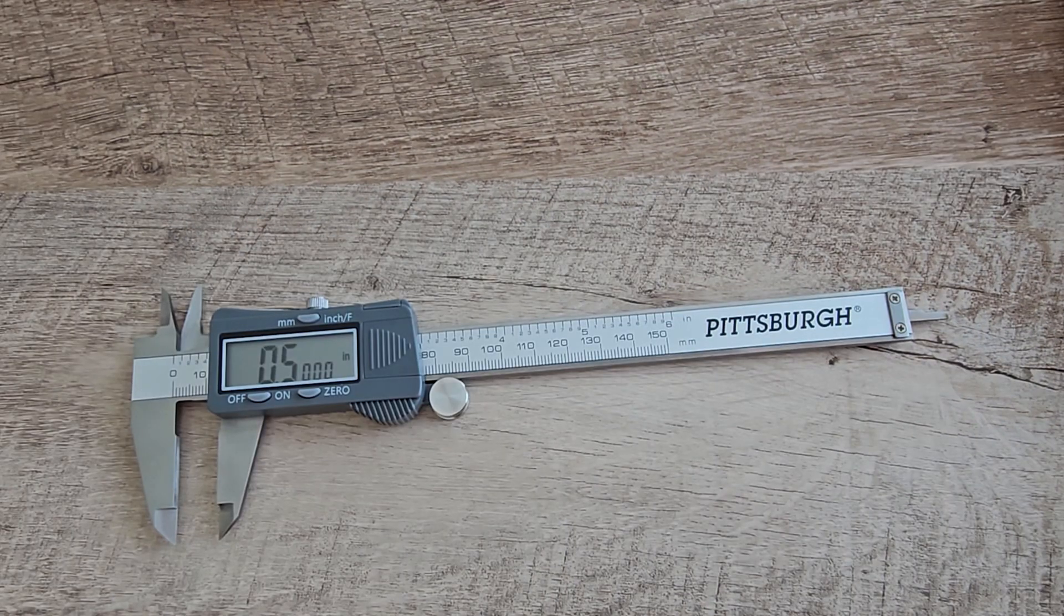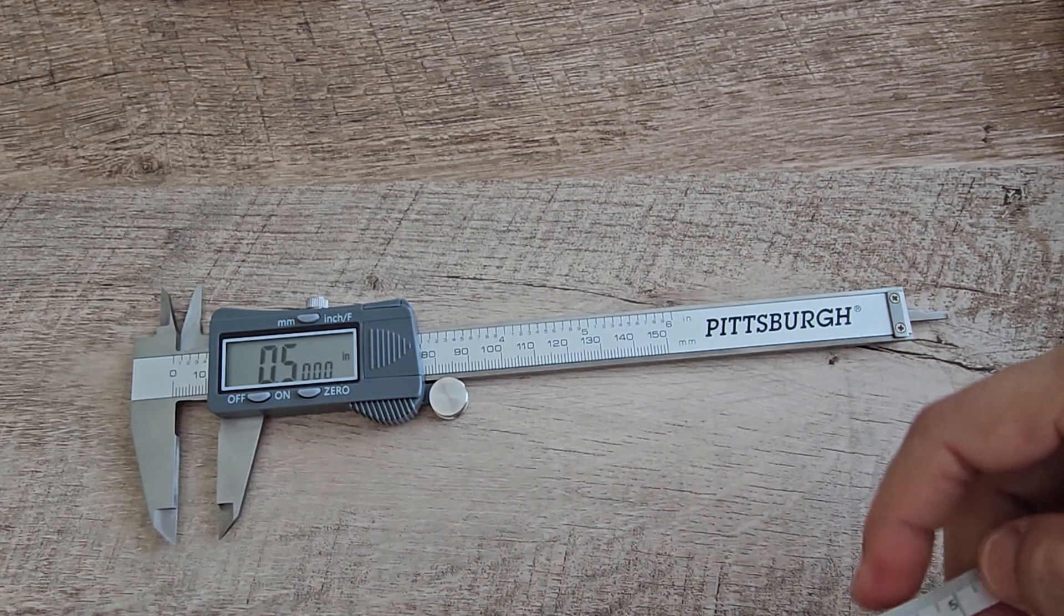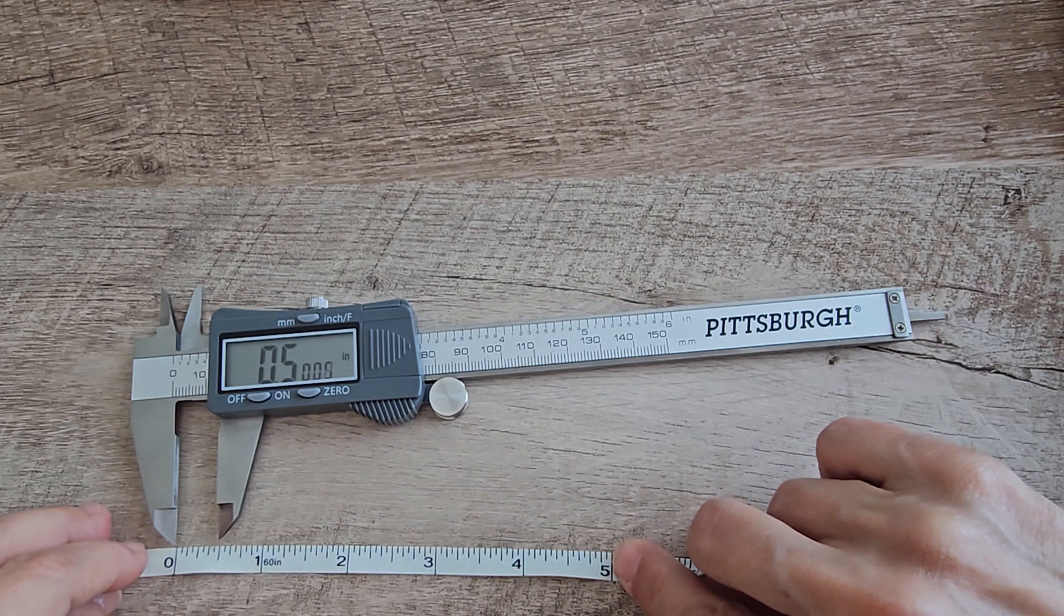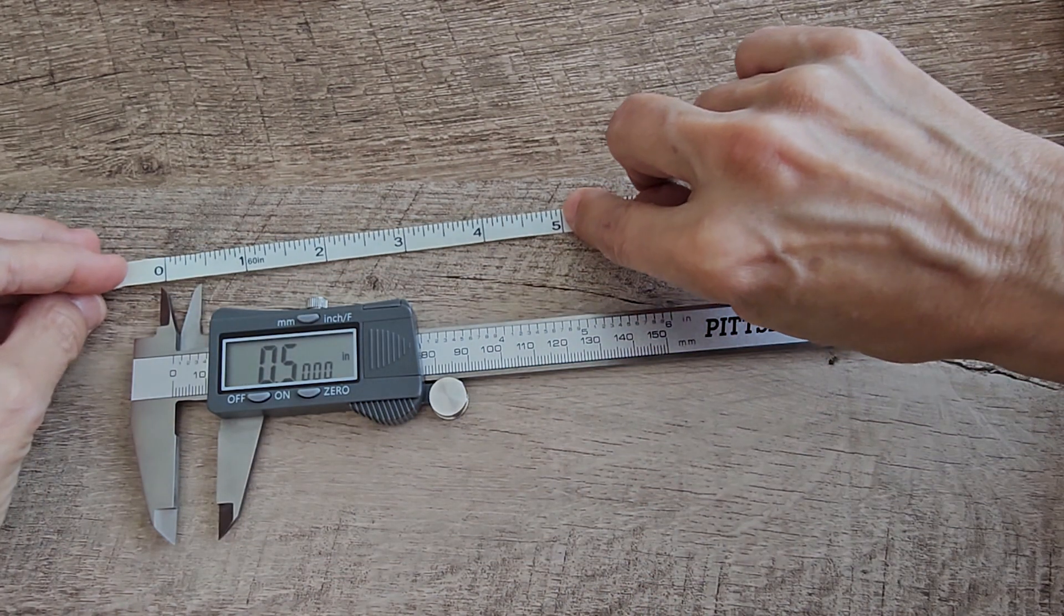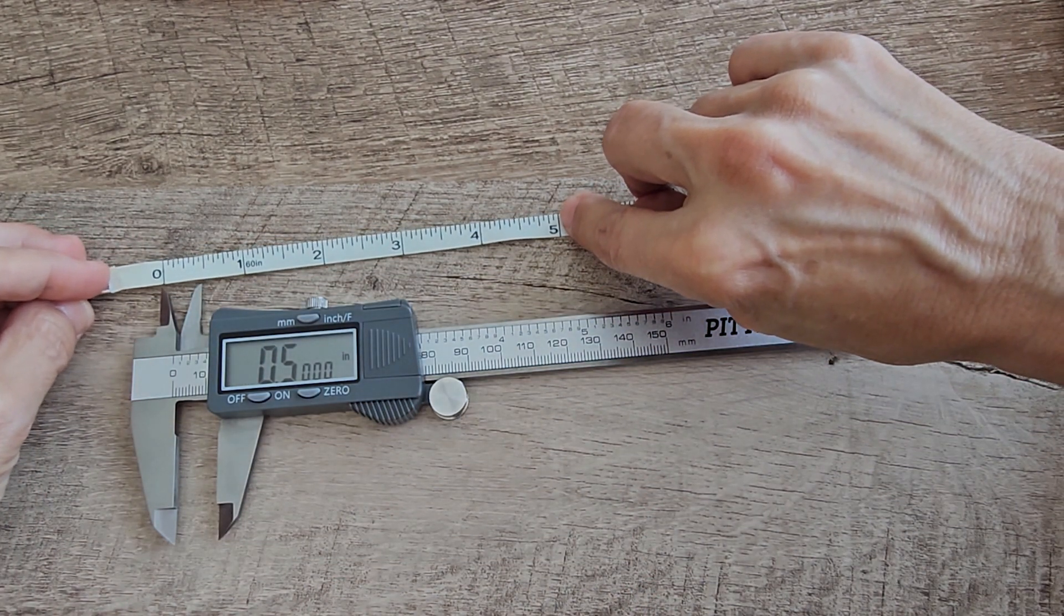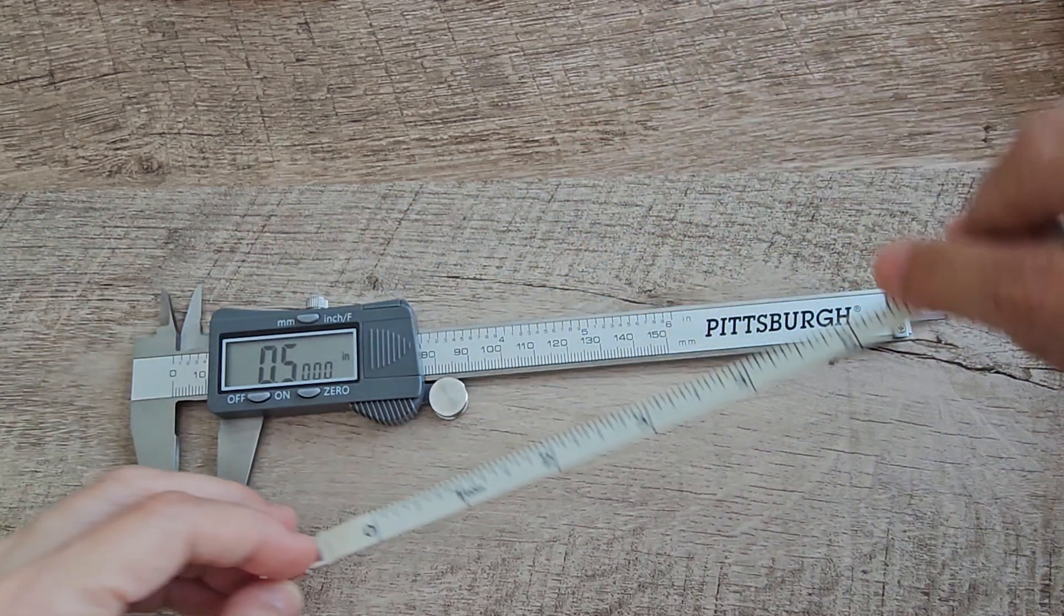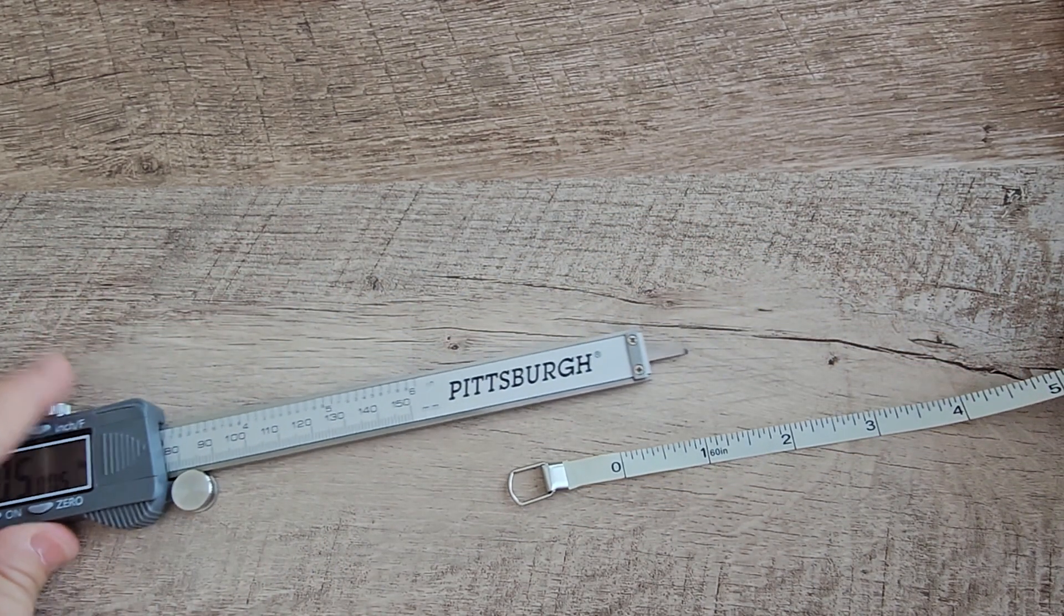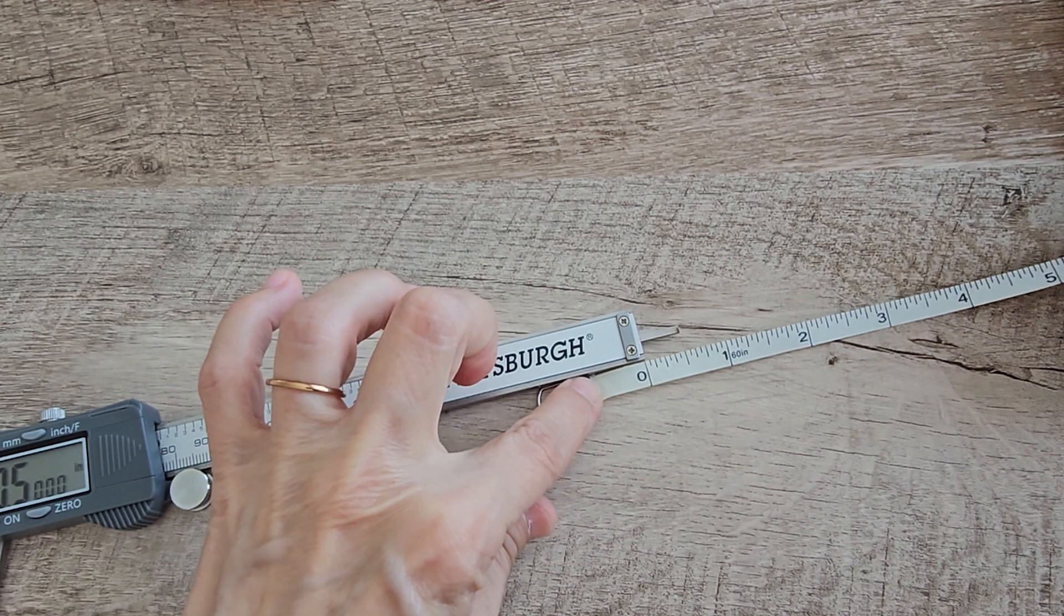So I've dialed it out to a half of an inch. So I'm just going to show you. It's a half inch here for an outside measurement, half inch here for an inside measurement, half inch for the depth measurement.